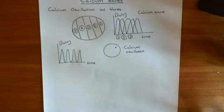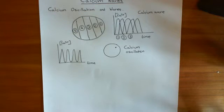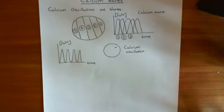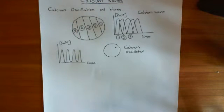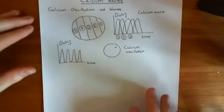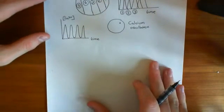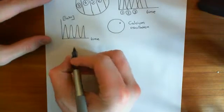Now let's look at where we see calcium waves. In the previous video, we saw calcium waves happening in oocytes — in Xenopus and sea urchin oocytes — where when the sperm touches the oocyte, it triggers calcium waves that propagate along the cytoplasm from the point of contact. But it's not only oocytes that have calcium waves.